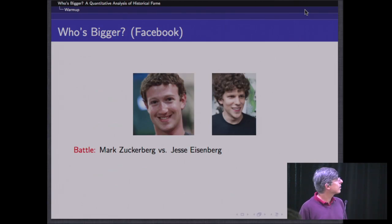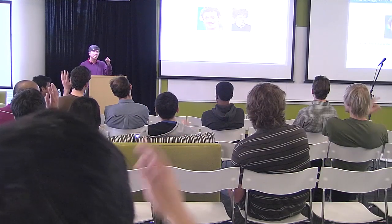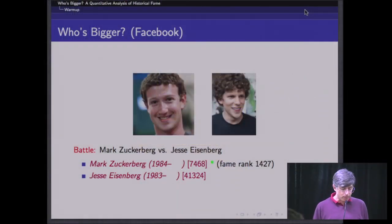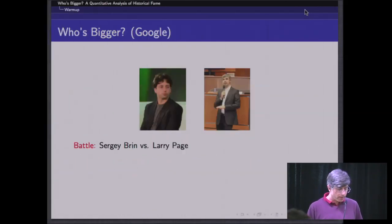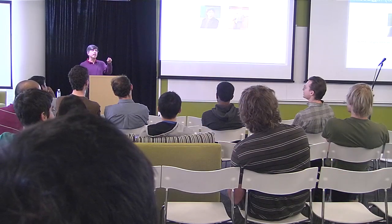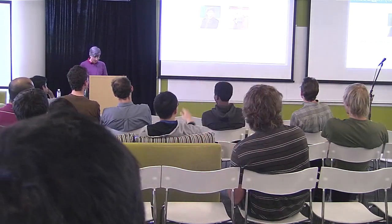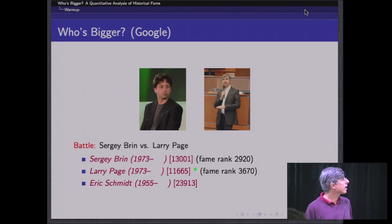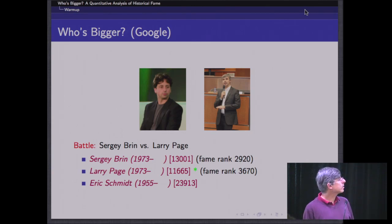Who's bigger: Mark Zuckerberg or Jesse Eisenberg? We have Mark Zuckerberg ranked around 7,500th in historical significance. Who's bigger: Larry or Sergei? We actually have Larry ranked somewhat higher than Sergei in terms of historical significance — lower is better in these rankings. But by fame, in terms of man-on-the-street recognition, we have Sergei Brin a little bit higher than Larry Page. Both of them rank higher than Eric Schmidt in terms of our historical significance measures.